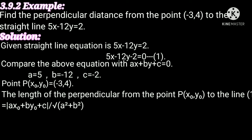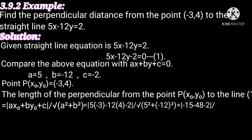Substituting: mod of (5 into minus 3, minus 12 into 4, minus 2) divided by square root of (5² plus (-12)²). That is equal to mod of (minus 15 minus 48 minus 2) divided by square root of (25 plus 144).